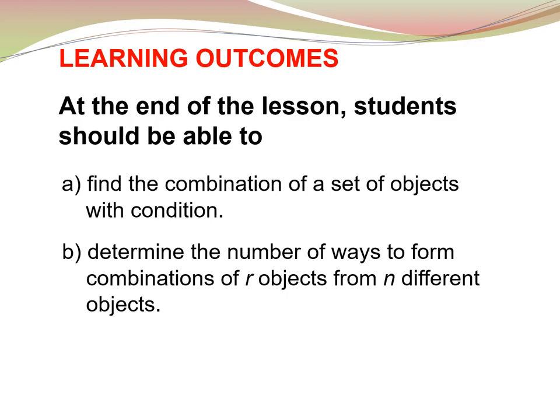Learning outcome. At the end of the lesson, students should be able to: (a) Find the combination of a set of objects with conditions. (b) Determine the number of ways to form the combination of r objects from n different objects.